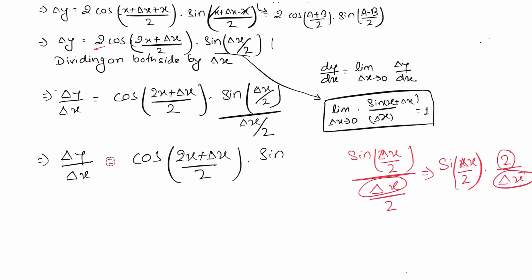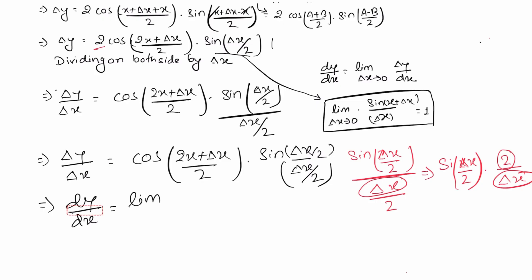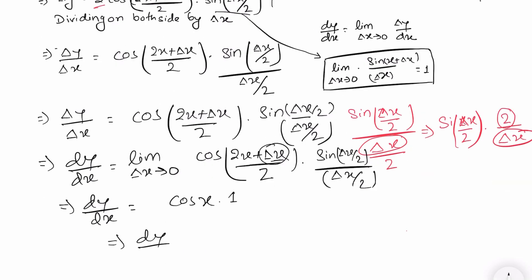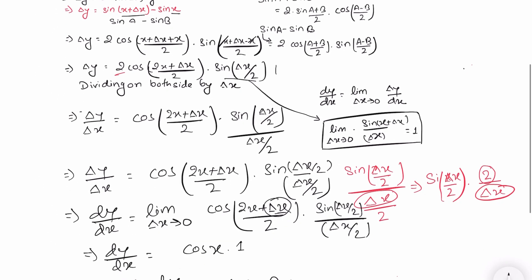So delta y over delta x equals cos((2x plus delta x)/2) times sin(delta x/2) divided by (delta x/2). Taking the limit as delta x tends to 0: dy/dx equals cos((2x + 0)/2) times 1, so the 2x over 2 gives cos x, and we have dy/dx equals cos x. This is our final answer — this is how we find the derivative of sin x using the first principle.